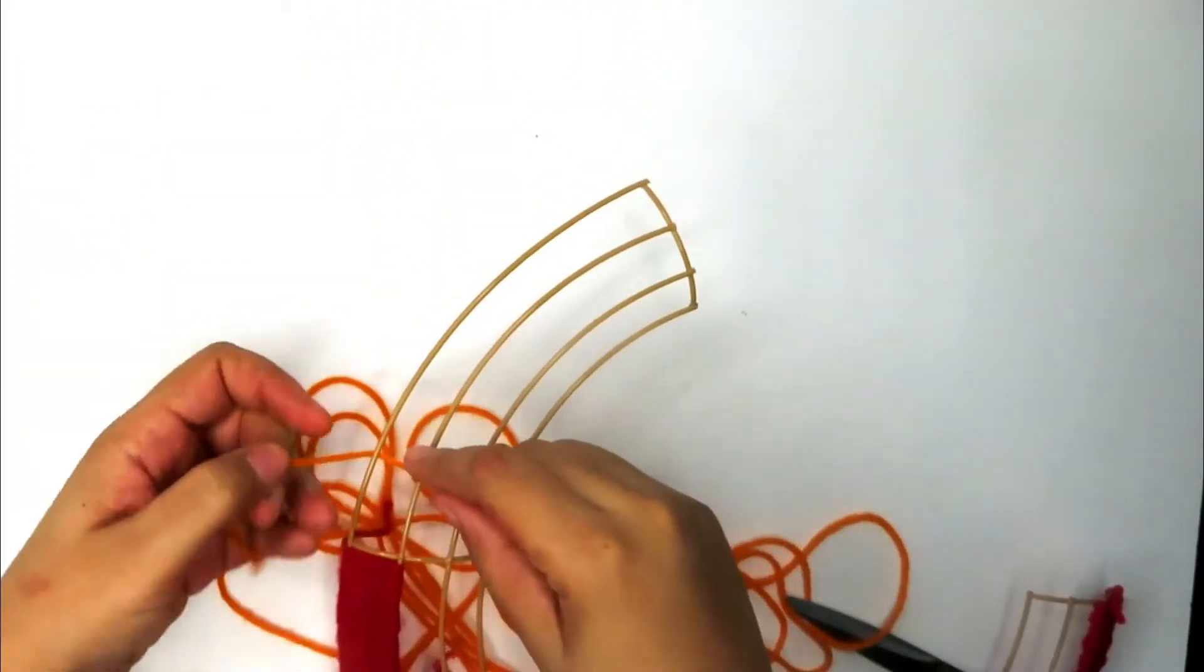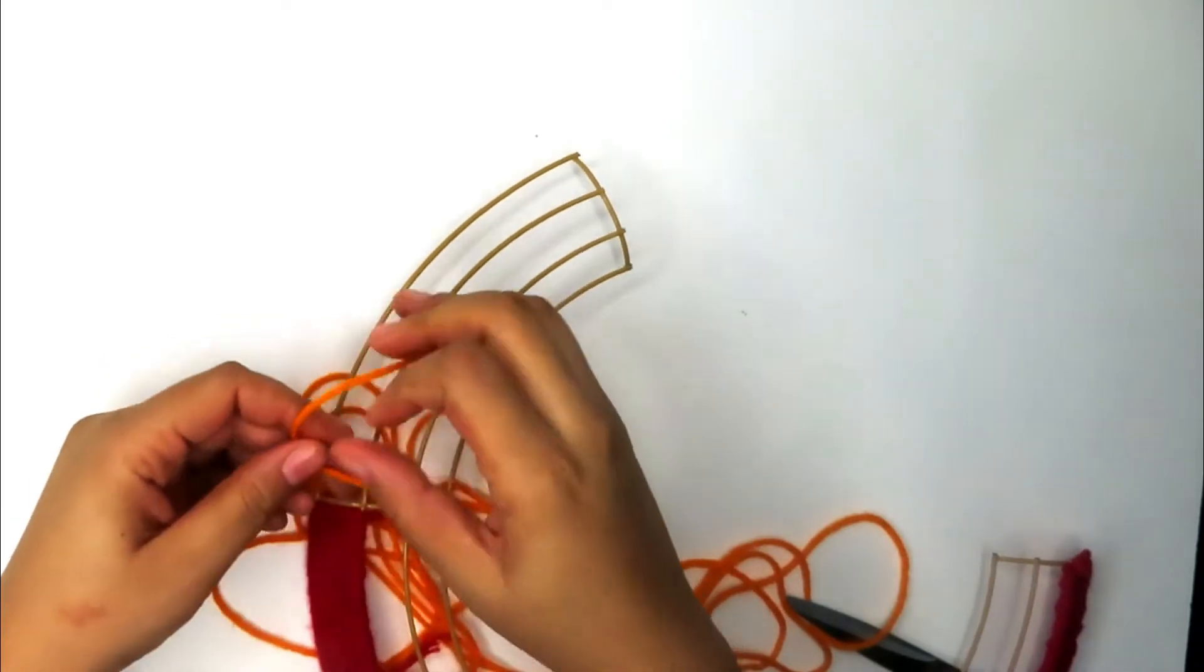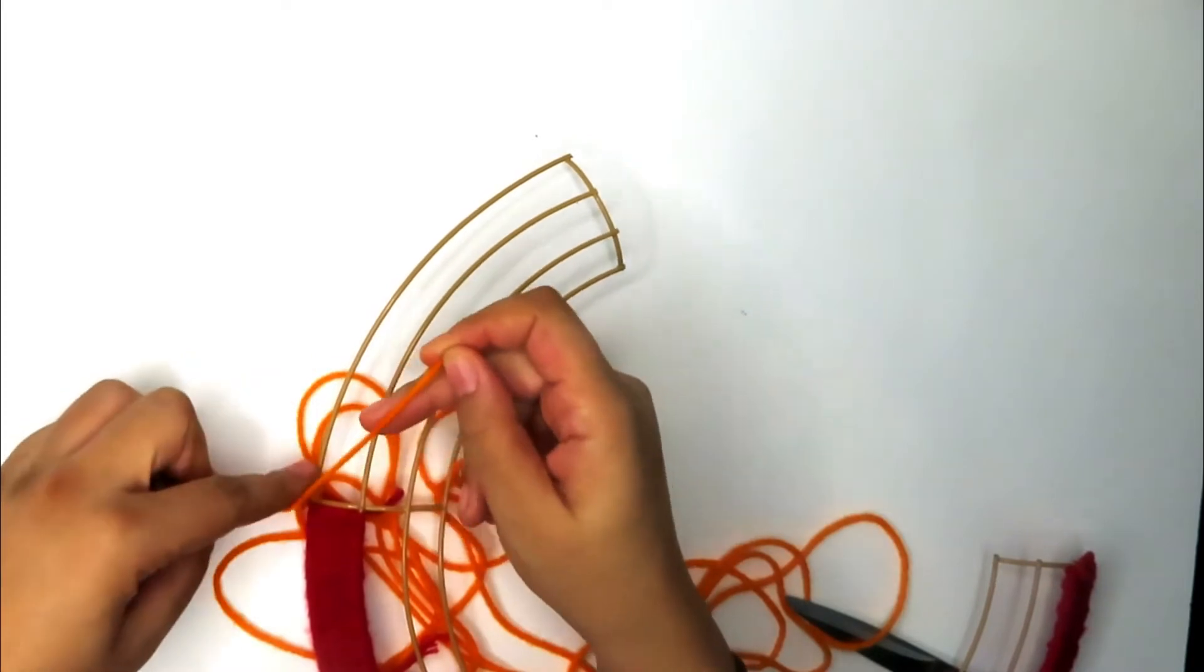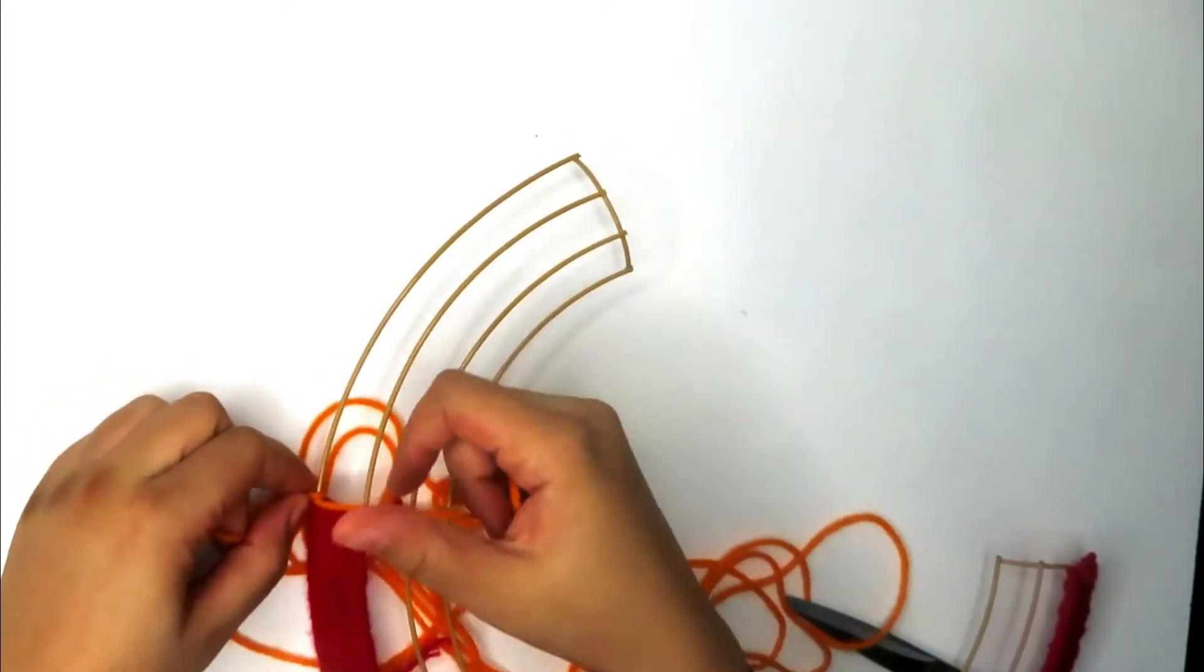Now do the same thing with the orange yarn. Tie a knot around the bottom of the fourth section and use a figure eight motion to fill out the entire fourth section top row with orange yarn.